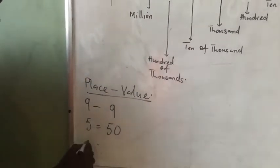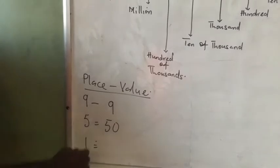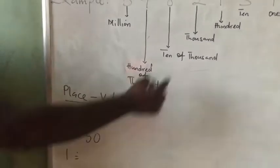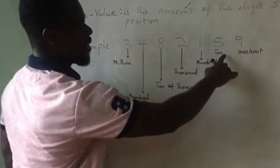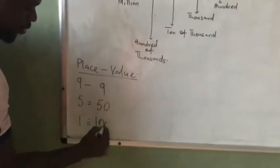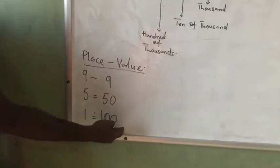Then we move on to the 1, which is what? At the hundreds. So what will you do? You write the 1 and the 2 digits behind it, which is the ten and the one, will change to what? 0. Good. So we have what? 100.